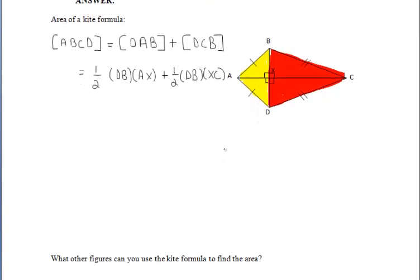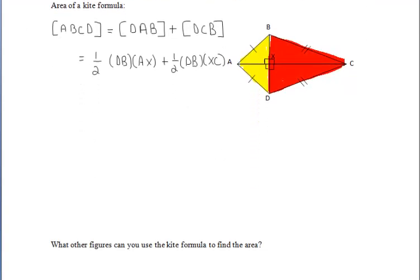Similarly to what we've done in the past, we can factor out a one half DB from each of the expressions, which leaves us with one half DB times the quantity of AX plus XC.